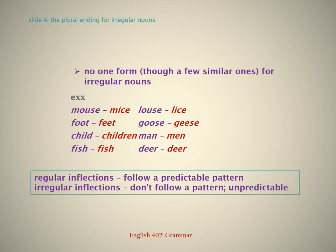Know one form, though a few similar ones, for irregular nouns. Examples: mouse/mice, louse/lice, foot/feet, goose/geese, child/children, man/men, fish/fish, deer/deer.